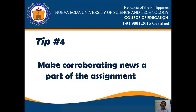Tip number four: make corroborating news a part of the assignment. In instances where the teacher wishes to have students research political or controversial issues, care should be taken to explain that not every website or blog is reviewed for accuracy. I teach my students to look for unusual claims, bias, and subjectivity in information found online. I suggest that for any claim about a politician, celebrity, or cause online, they try to find another site that corroborates the original information, for a balanced and reliable result.